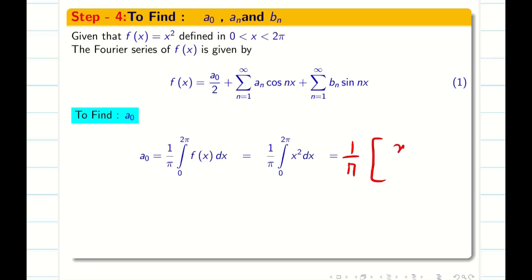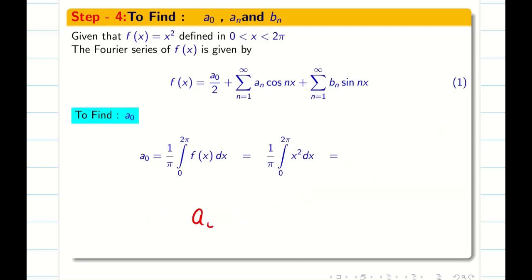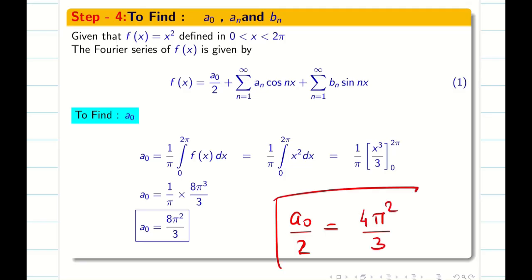Integrating this we will be getting x cube by 3 integral 0 to 2π. Applying the upper and lower limits, we will be getting 2π whole cube by 3 for upper limit. For lower limit it is 0. So my answer is 8π cube by 3 into this 1 by π. So my a naught is 8π square by 3, but I need a naught by 2. So always write a naught by 2 and highlight it. a naught by 2 is 4π square by 3.